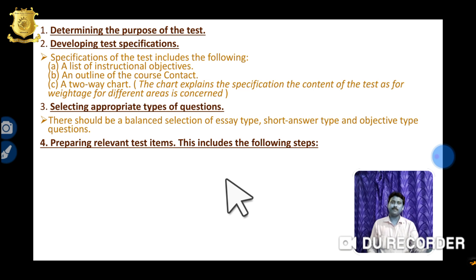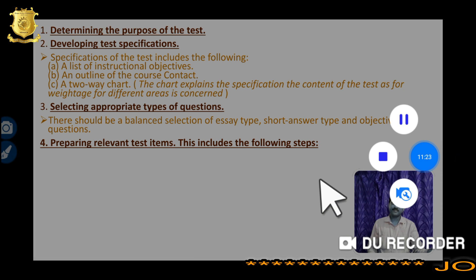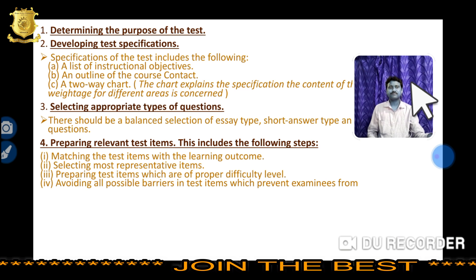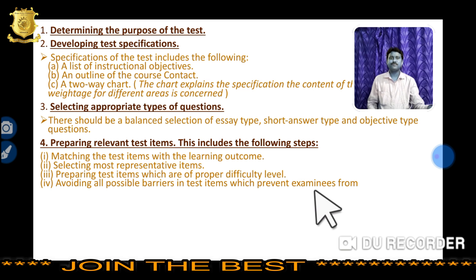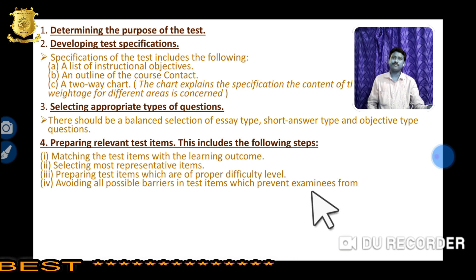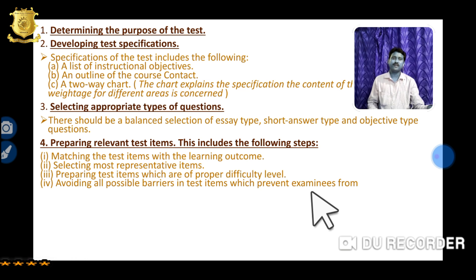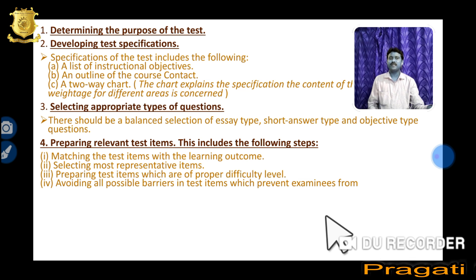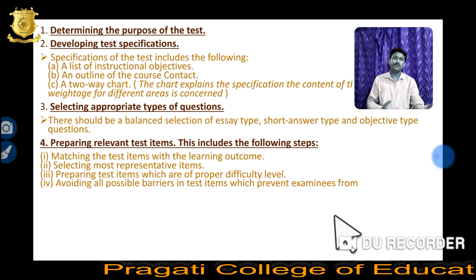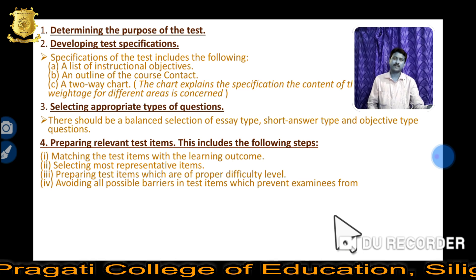For preparing relevant test items: you need to prepare your test items by meshing the test items with the learning outcome. Next, select the most representative items. Next, prepare test items which are of proper difficulty level. And avoid all possible barriers in test items which prevent examinees from demonstrating their knowledge.